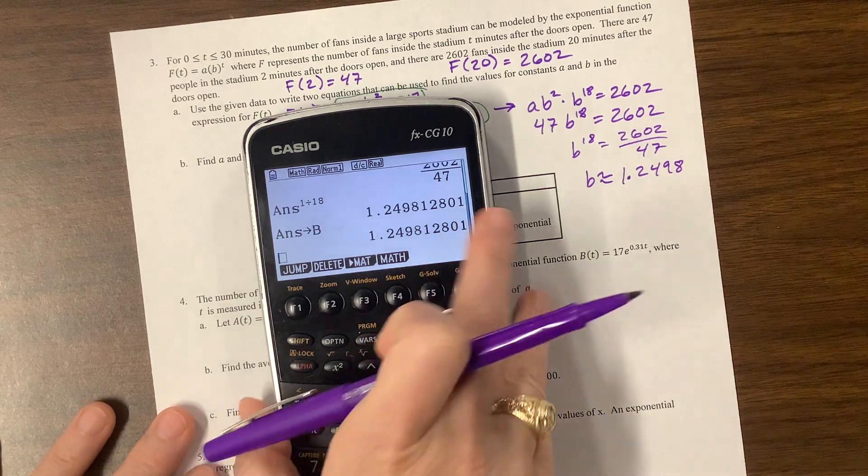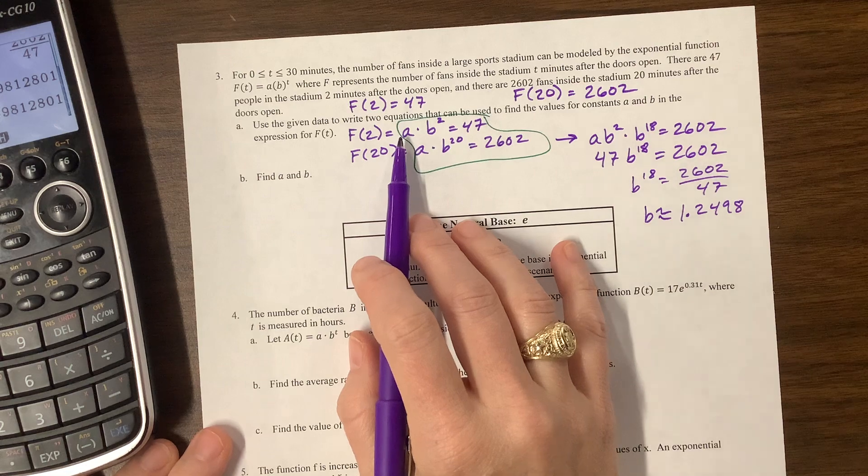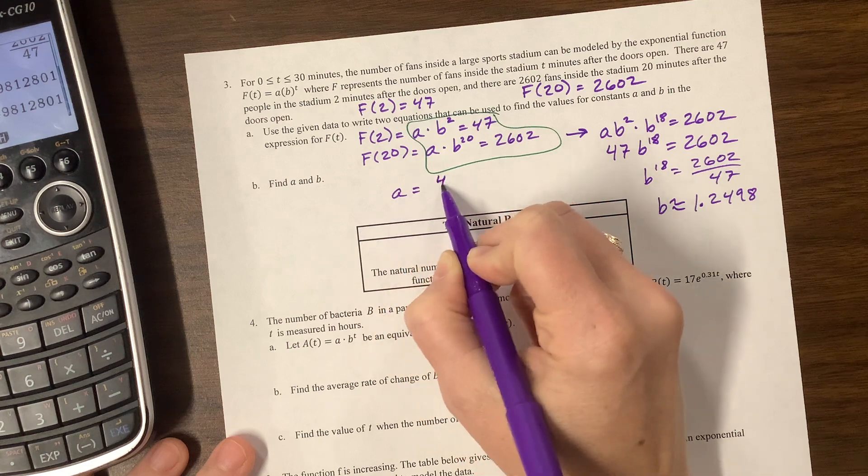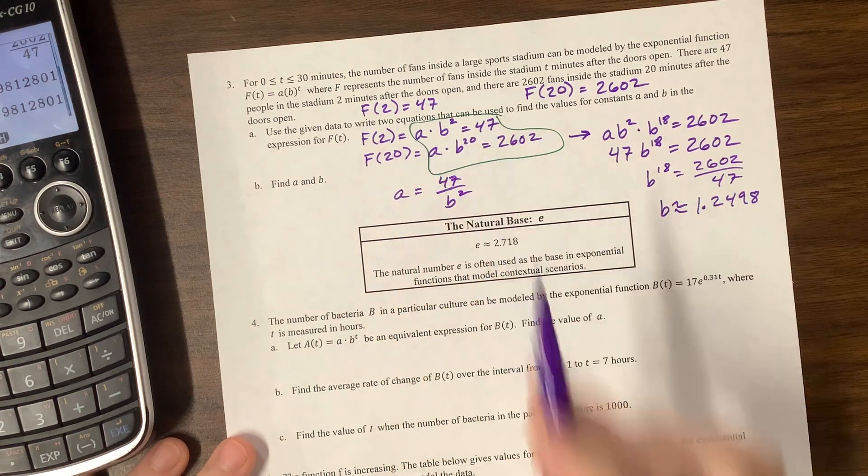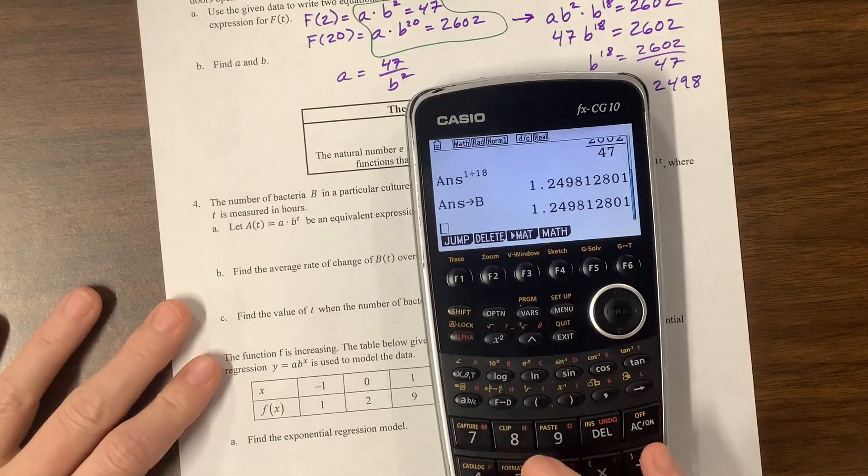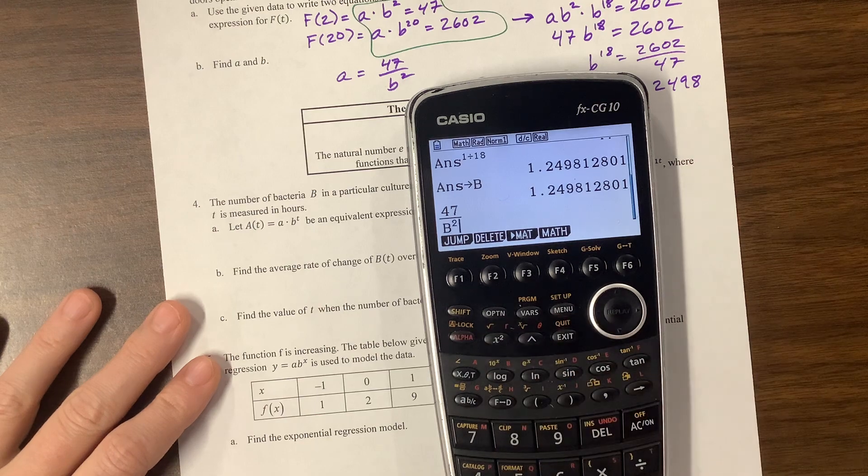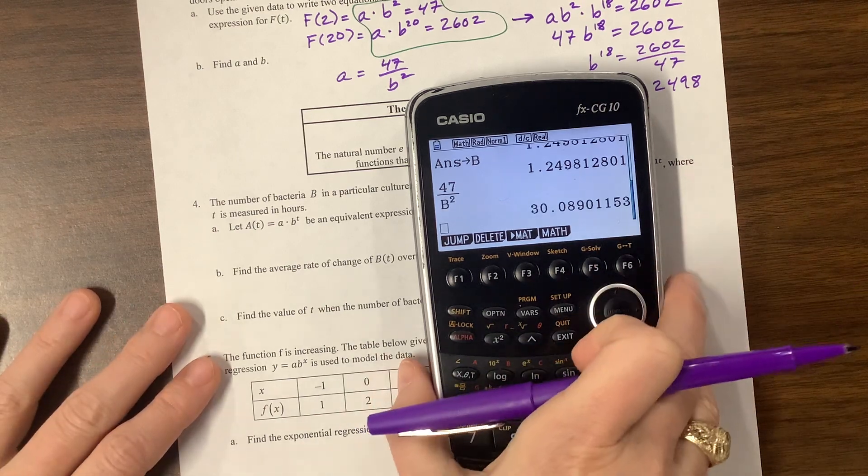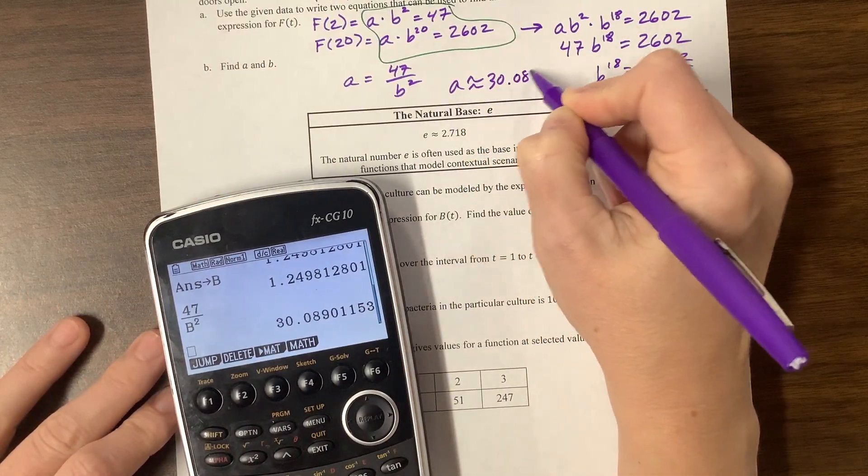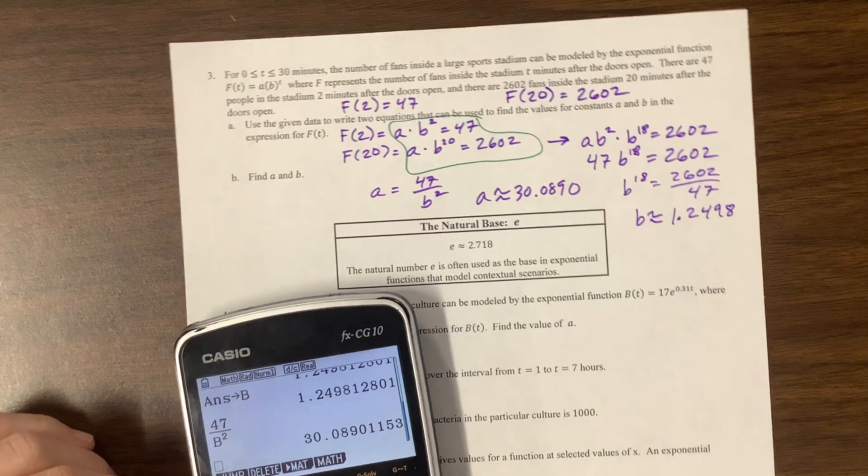And what I might do is I might take this and store this as alpha B. That way I can hang on to all my details. And then what do we know? Well, here's a B value to go back and find the A value. I can plug into this equation. And so I have that A would be equal to 47 over B squared when I take this original problem. And so I know what the B, I stored it as that B value. So I can say 47 over alpha B, oh, that's C, alpha B squared is about 30 point, so A is approximately 30.0890. Okay. Well, that was fun. I was expecting pretty numbers. We did not get pretty numbers.